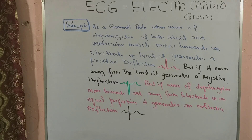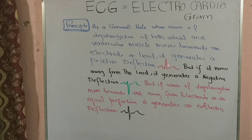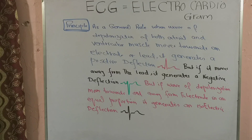There is a general rule about the wave of depolarization and its representation on ECG paper. When a wave of depolarization moves towards an electrode or lead, it generates a positive deflection — a tall R wave and a very small S wave; this is a positive lead. If the wave moves away from the lead, it generates a negative deflection with a very deep S wave and a very small R wave. If the wave moves towards and away from the electrode in equal proportion, it generates an isoelectric deflection where the height of the R wave and the depth of the S wave are almost equal.